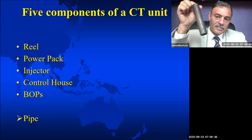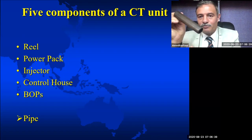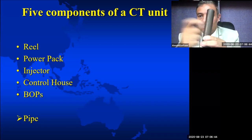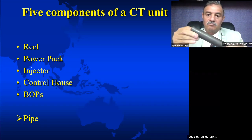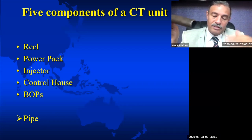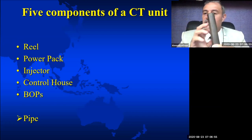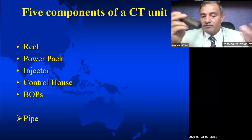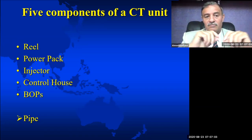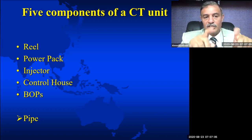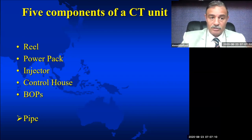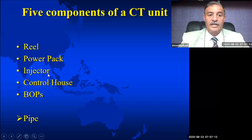This is a pipe — this is a piece of what we run in the hole. It is metal, as you can see, and on the reel you might have 10,000, 15,000, 20,000 feet or even more. Sizes are different and we have many sizes, which we will discuss. Let us talk quickly about each part of these components. Today we are going to talk about the power pack, the reel and the injector, but first let us talk a little bit about the pipe itself.